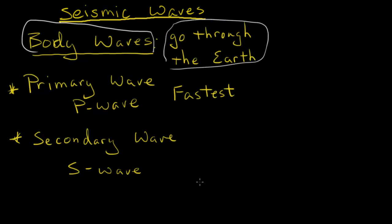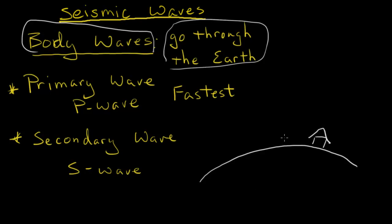Let's say this is the surface of the Earth, here's a little house, and here's the focus of our earthquake. Our P wave is going to travel first, and then our secondary wave is going to follow along after it, because it's slower. You can see that both are traveling through the Earth.